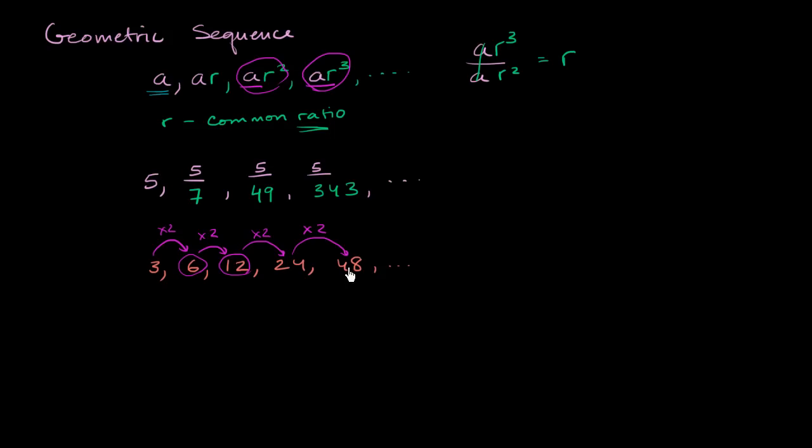So for example, in this sequence right over here, each term is the previous term multiplied by 2. So 2 is our common ratio.